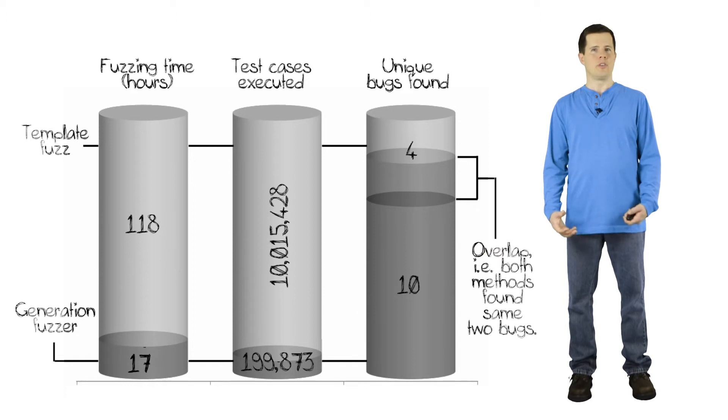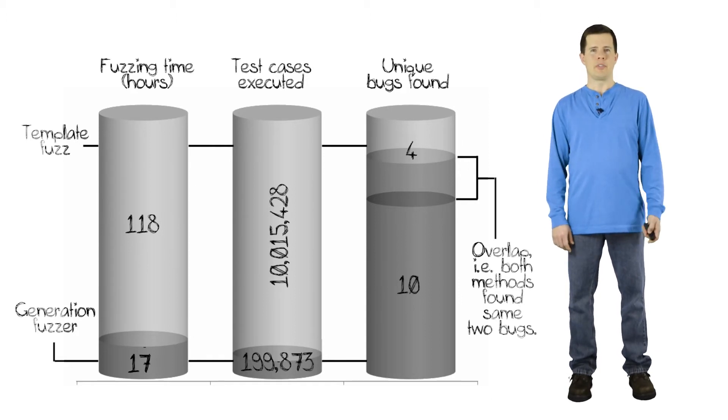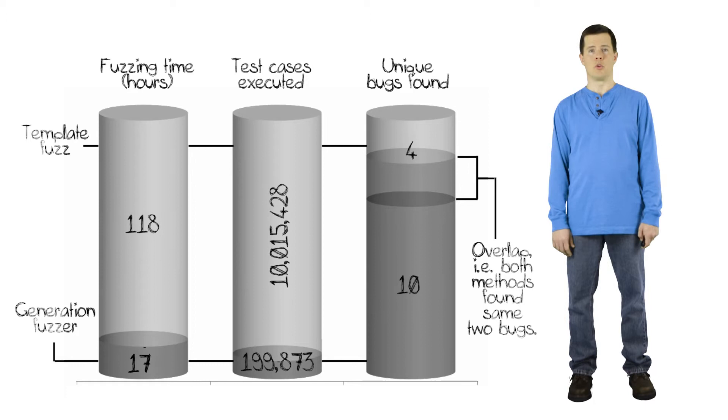This is a really interesting comparison of fuzzing done on a single target. So we had this network filer, and we ran a template fuzzer on it and a generational fuzzer on it. And the template fuzzer ran for 118 hours and in that time delivered 10 million test cases and uncovered four vulnerabilities altogether.